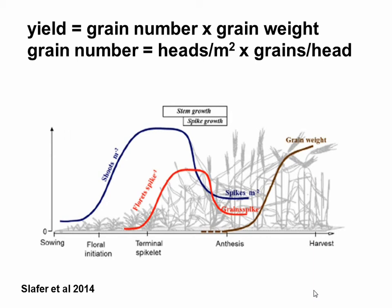This shows the dynamics of yield components in a wheat crop. Tillers are produced, then go through a stage of mortality, so the number of heads per metre at the end is not defined by how many tillers develop but by that mortality stage. The second component is grains per spike — the plant overproduces florets, and there is a similar mortality stage. Then there is grain filling. But the window of a few weeks before flowering is the critical one because that's when mortality of heads and grains per spike is occurring. From a management viewpoint, we want to reduce the probability of stress hitting the crop during this critical stage.